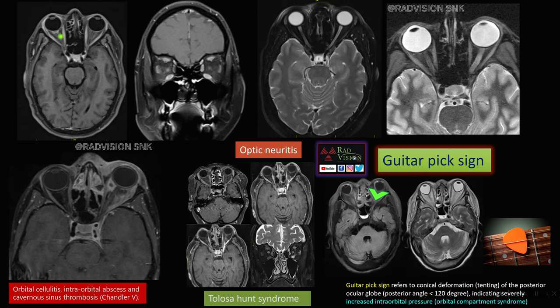Here there is enhancement of the optic nerve with absent fat stranding — a case of right optic neuritis. Similarly, here is a case of left optic neuritis, also showing optic nerve enhancement with absent fat stranding.